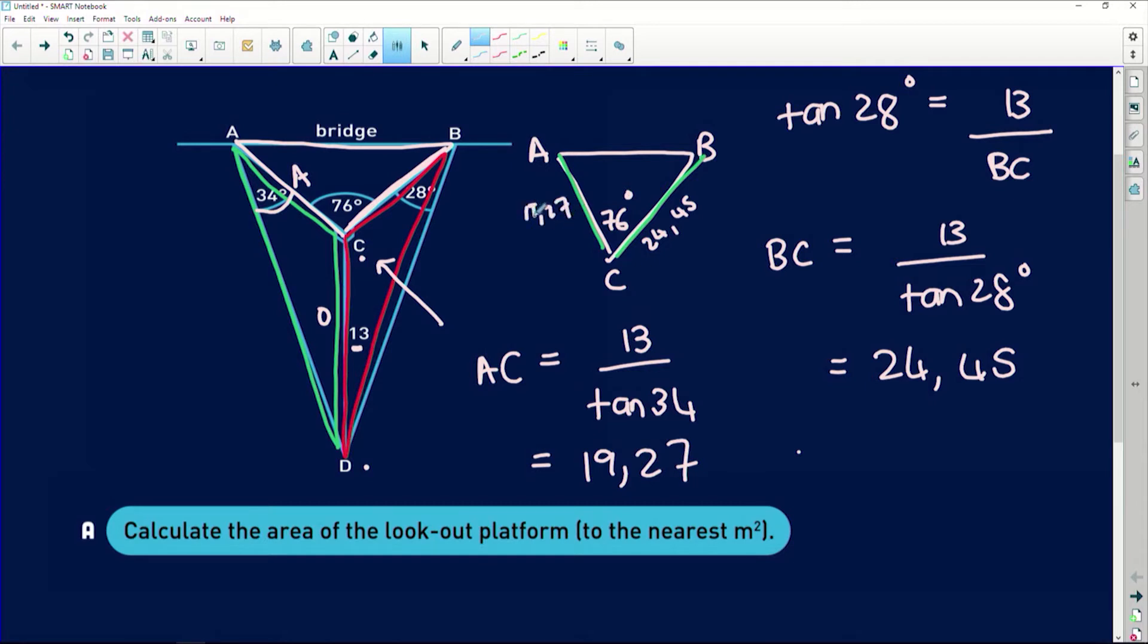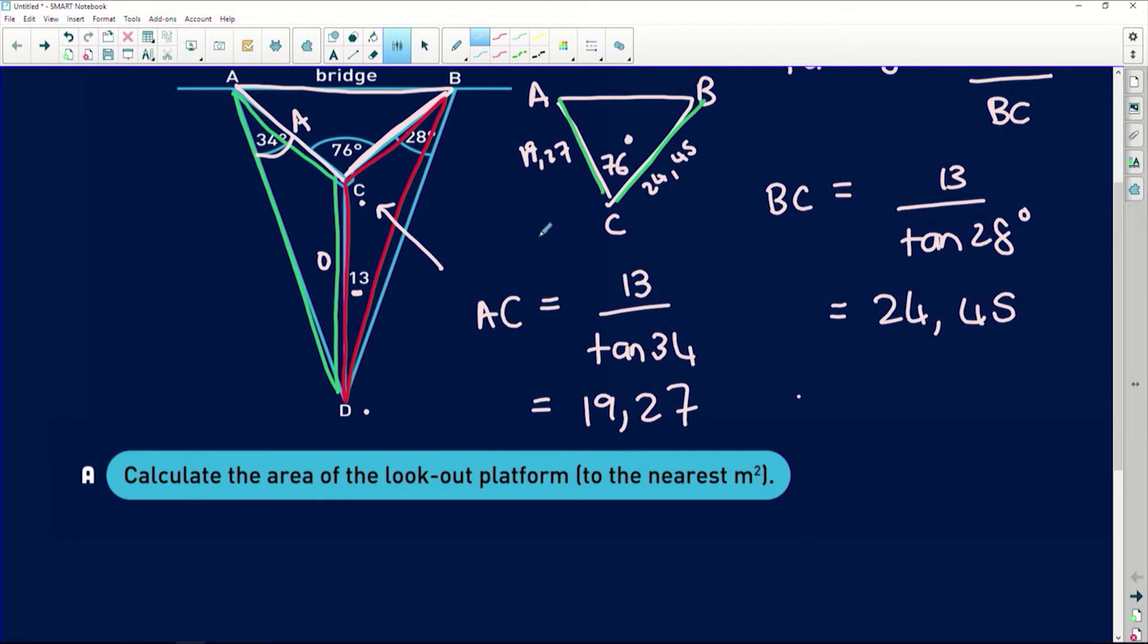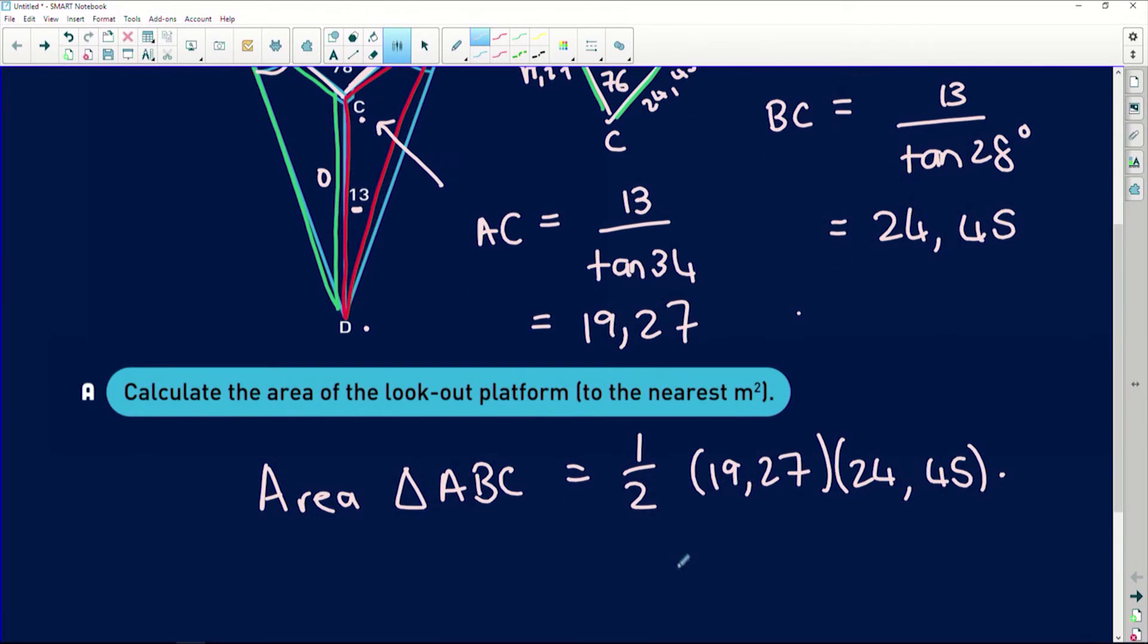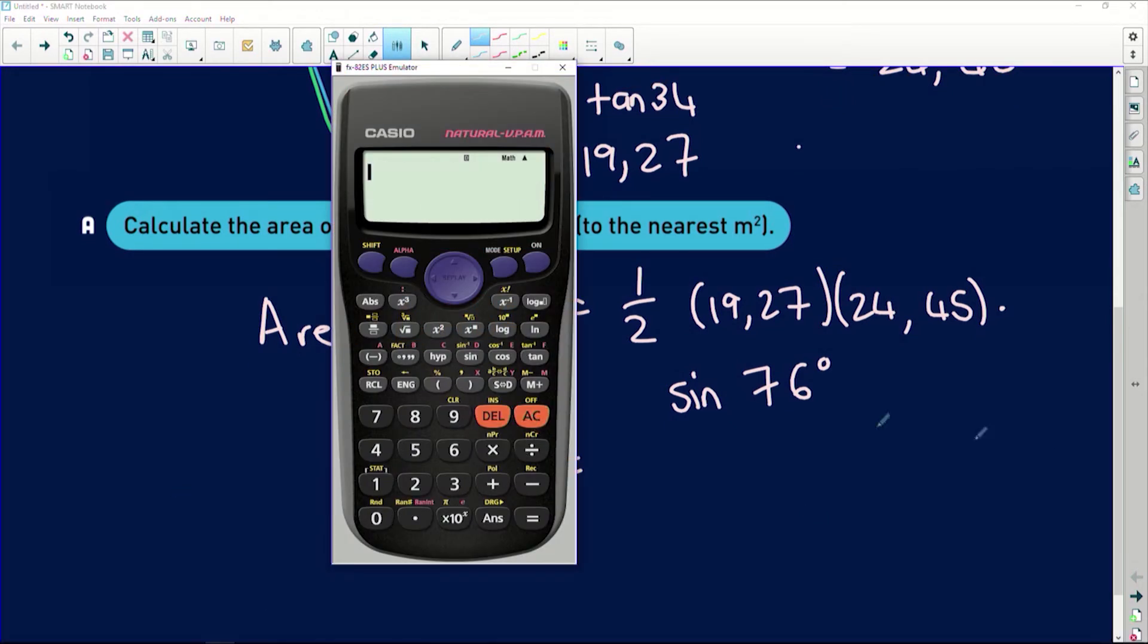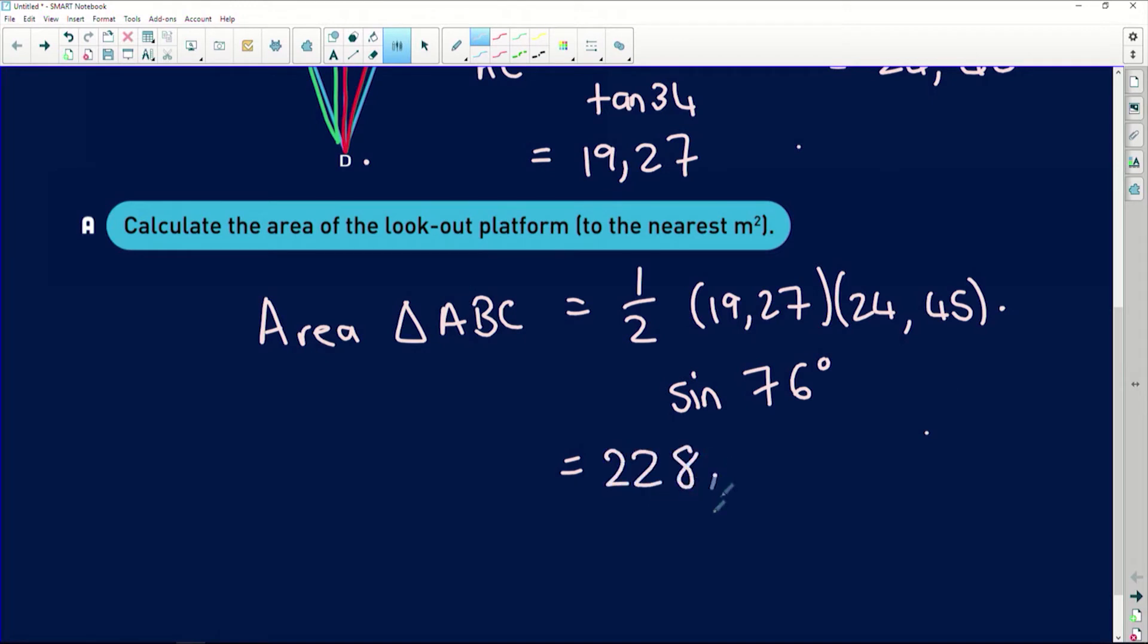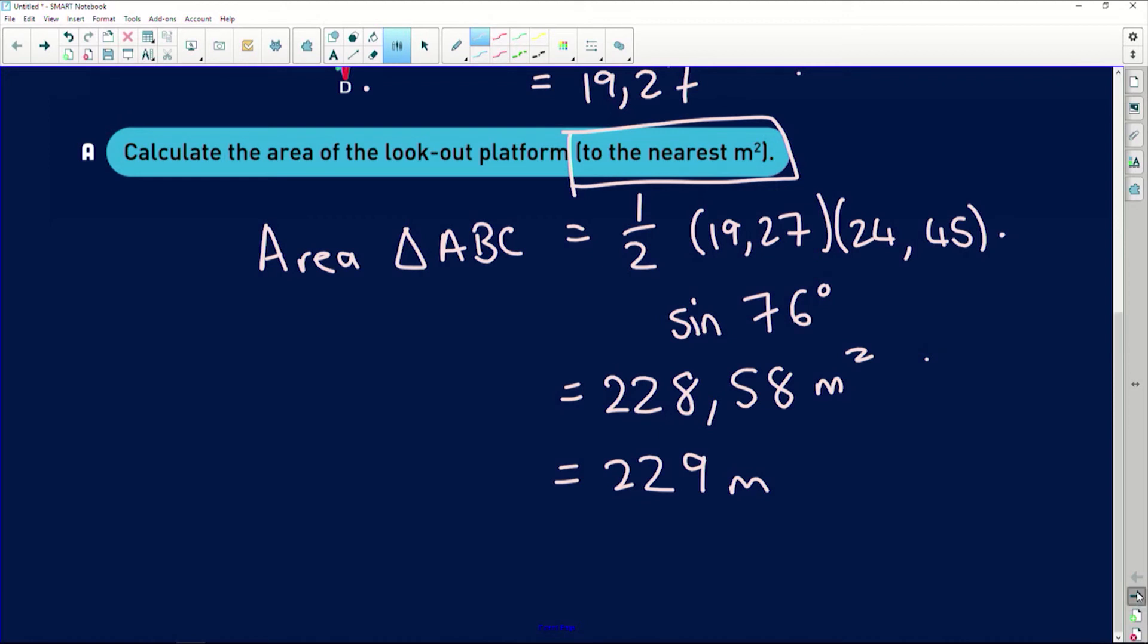Okay, so now guys, easy peasy lemon squeezy! The area of triangle ABC is equal to half of one side, 19.27, multiplied by the other side, 24.45, multiplied by sine of their included angle, 76 degrees. So one half multiplied by 19.27 multiplied by 24.45 multiplied by sine of 76 degrees gives us 228.58. But remember the question said to the nearest meter squared, so that gives us 229 meters.